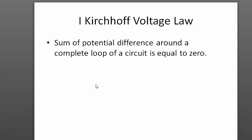The Kirchhoff's Rules has two parts. The first one is the Kirchhoff's Voltage Law, sometimes abbreviated as KVL, which states that the sum of potential difference around a complete loop of a circuit is equal to zero.